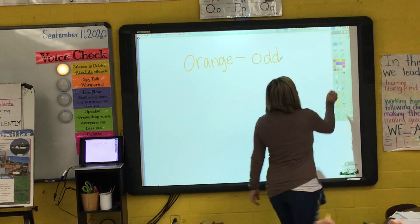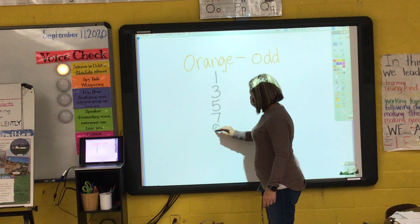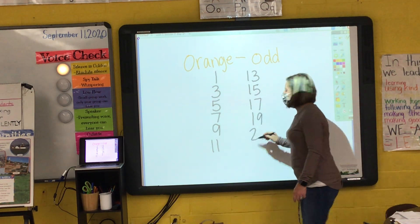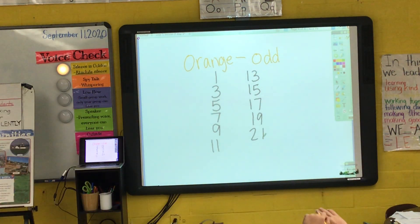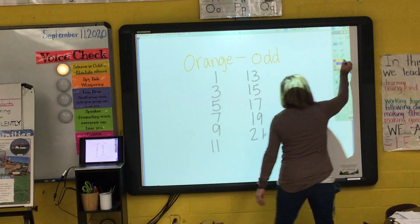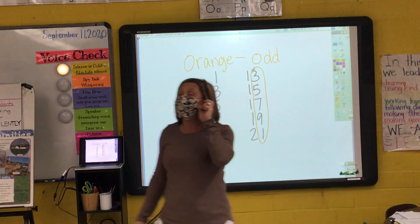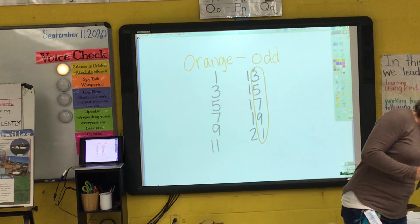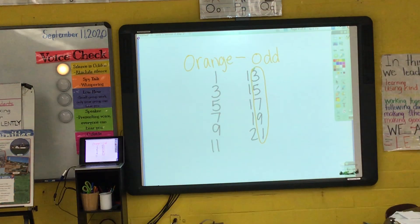I'm going to write our odd numbers starting with 1 and stopping at 21: 1, 3, 5, 7, 9, 11, 13, 15, 17, 19, 21. What do you notice about all of our odd numbers? What do you notice about the digits in our odd numbers? Melina? They only have 1, 3, 5, 7, and 9. Odd numbers have only 1, 3, 5, 7, or 9. Go ahead and turn now to your guided practice page. Please write your name, number, and today's date on your guided practice page.